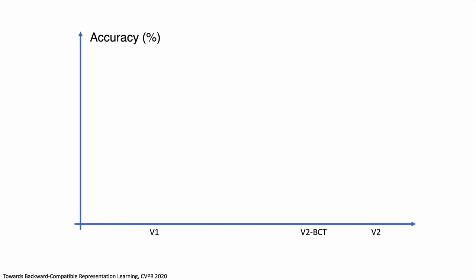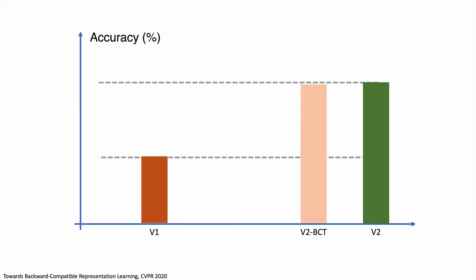To test our method, we compare backward compatible training against the baseline — which is to keep using the old embedding — and the paragon, obtained by backfilling and using only the new embedding. Ideally, the backward compatible trained model exhibits performance close to the paragon, or upper bound, while requiring a cost similar to the baseline, or lower bound. Indeed, this is what we observe in our experiments. Without backfilling, it improves search accuracy over the baseline, obtaining almost half of the accuracy gain in the paragon case.